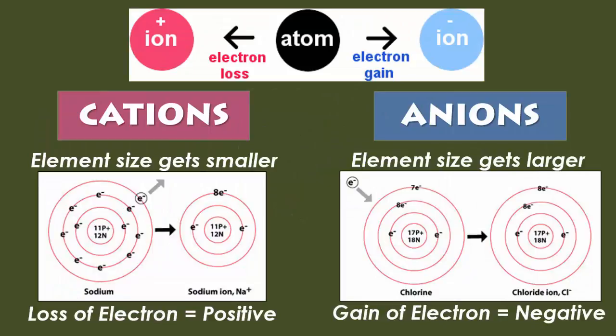When an atom loses an electron, it becomes a cation, which means the element actually gets smaller in size. If you have equal charges and you lose one of those negative charges, the nucleus is going to be giving off more positive, so therefore cations are positively charged. If an atom were to gain an electron, it would become an anion. As you gain electrons, your atomic radius will increase, and as it increases it also gains a negative charge — because there are more electrons than there are protons, so therefore it is negatively charged.